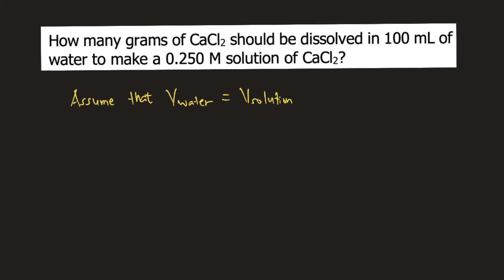We are given 100 mL of water. First is to convert this into liters. We know that 1 liter is equivalent to 1,000 mL. mL would cancel, now we have liters.